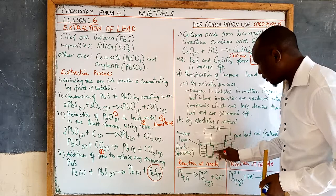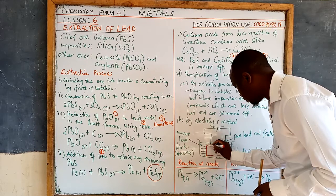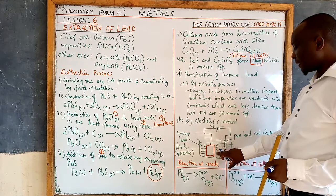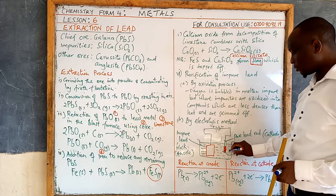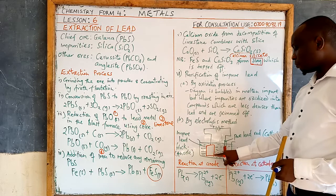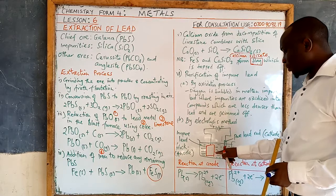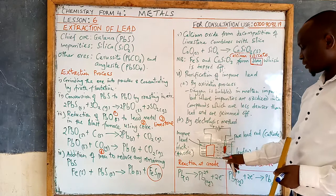During electrolysis, lead ions from the solution will gain electrons and are deposited on the pure lead cathode. The impure lead is the anode. Lead ions from the solution keep coming to the cathode — that is where there is an increase in mass. While at the anode, the lead atoms lose electrons and go into the solution to replace the lead ions being discharged.